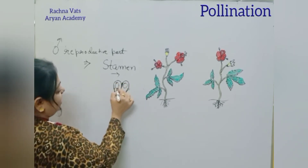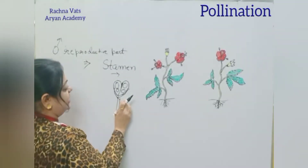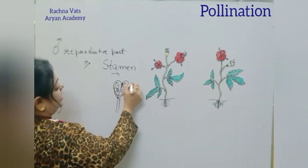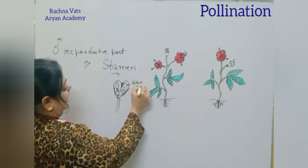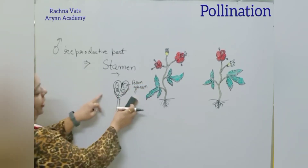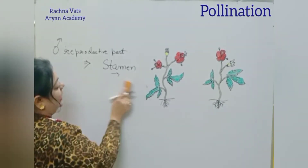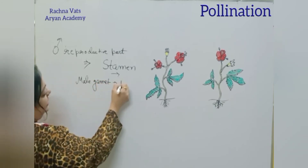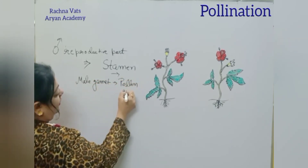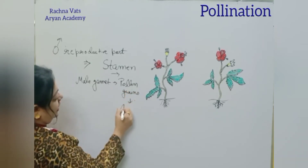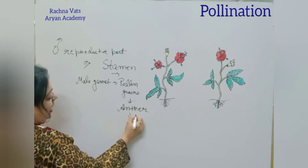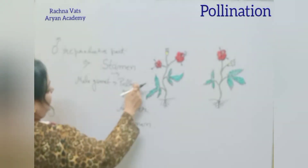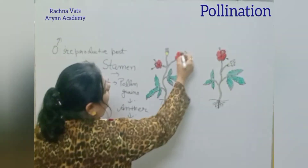Pollen sacs are present inside the anther, in which lots of pollen grains are present. These pollen grains basically contain male gametes. So the male gamete is present in pollen grains, and the pollen grains are present in the anther, and the anther is a part of the stamen. The male gamete is the pollen grain, which is present inside the anther.